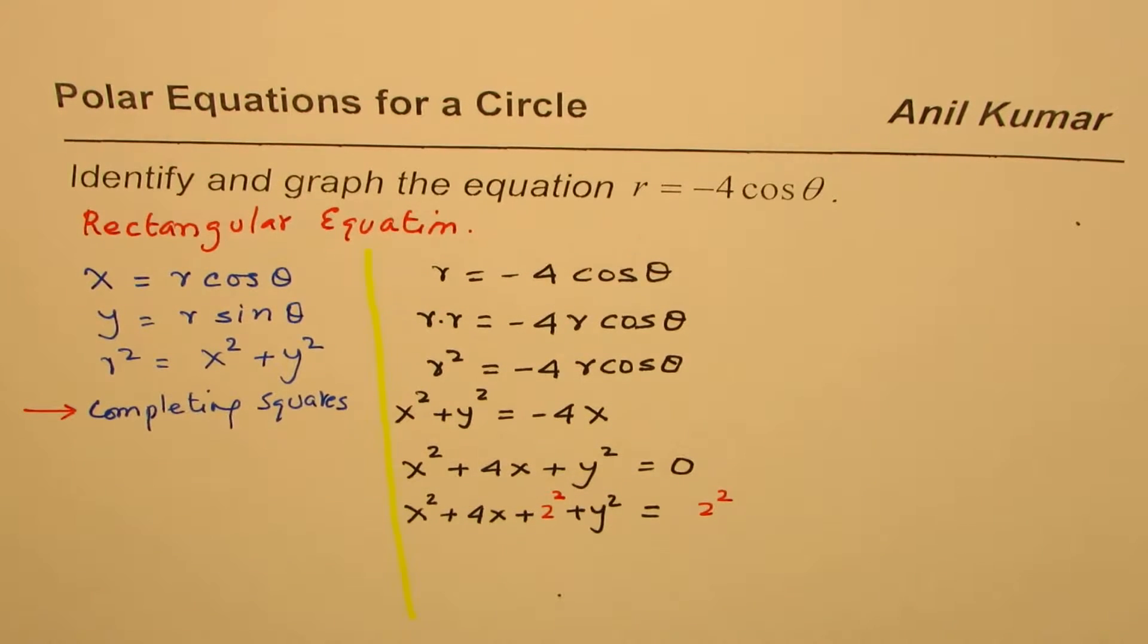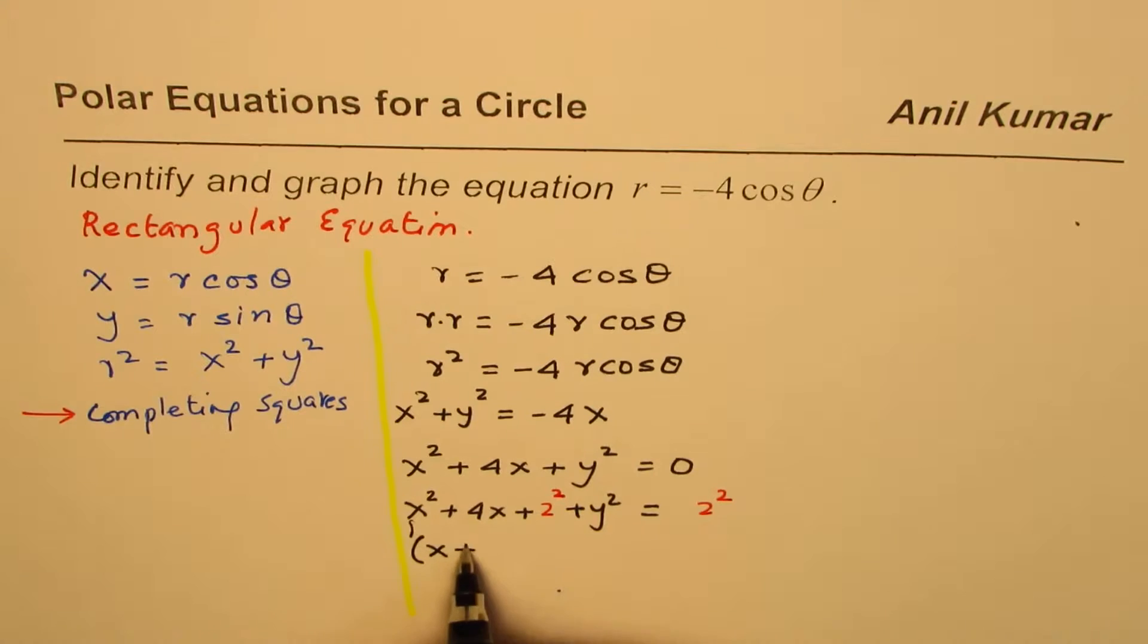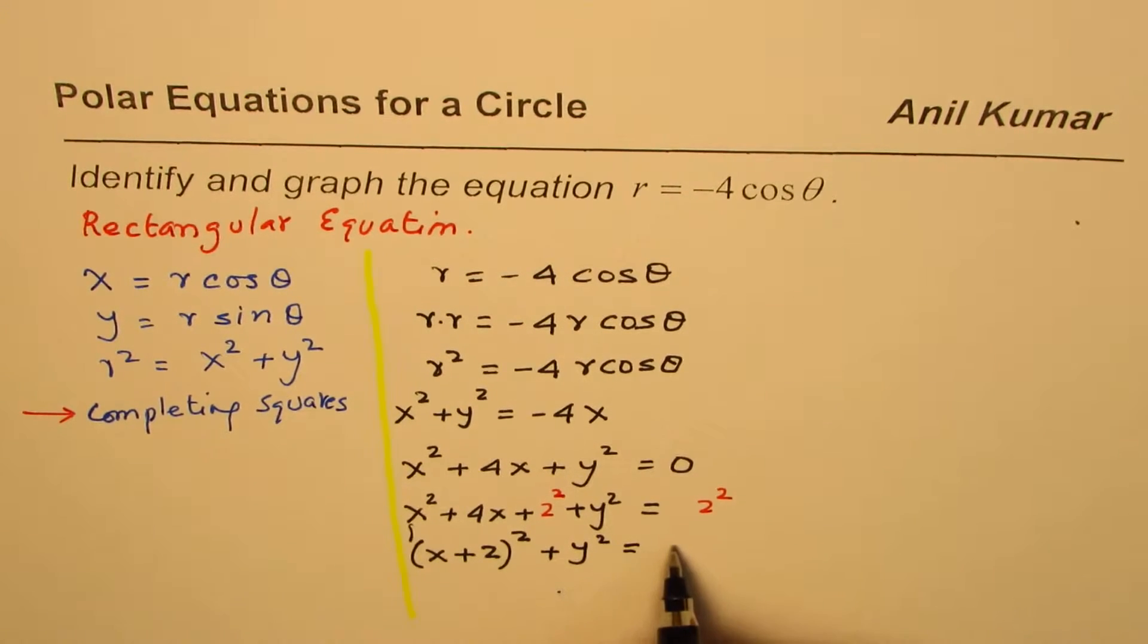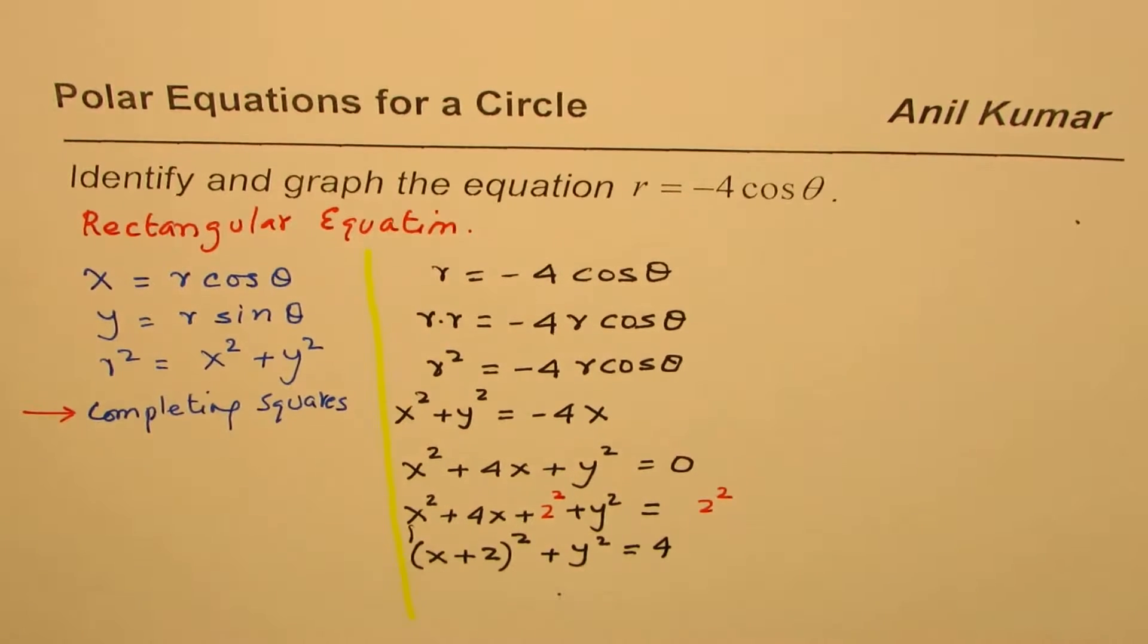You may have to review this concept if you don't understand it. Now, these 3 terms form a perfect square, and it could be written as x plus 2 whole square. And we have plus y squared equals 2 squared. Let me write as 4 or 2 squared.